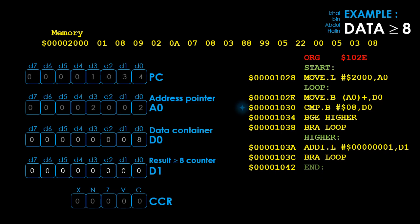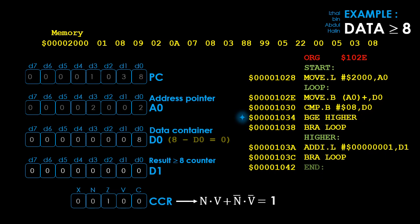The program counter is now pointing at address 1030. Before executing, the program counter is updated to the next instruction's address. The compare instruction is executed. This time the two data values being compared are the same — the 68K subtracts 8 from 8, resulting in zero. This causes the status register to be updated to 00100 because the result is zero. The BGE higher instruction is executed, the condition codes are evaluated, and the result is 1 — thus a branch to label higher is done by updating the program counter with the address 103A.